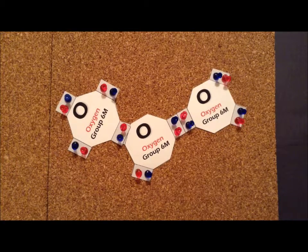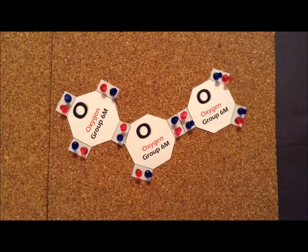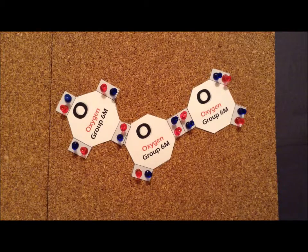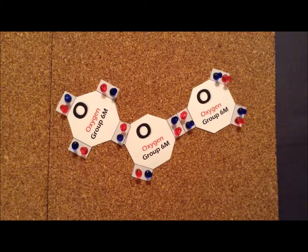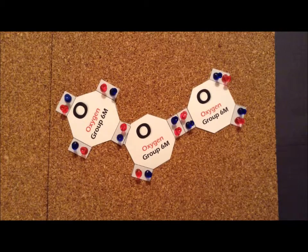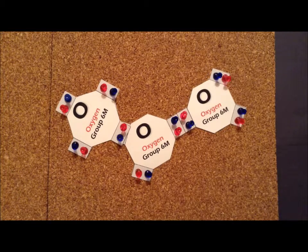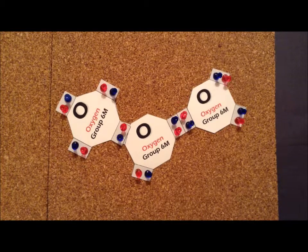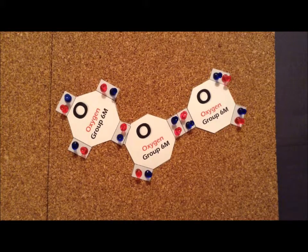Oxygen can also exist in another allotropic form other than dioxygen, O2. This other allotropic form of oxygen is called ozone, and it has the chemical formula O3. So we'd like to be able to construct the valid Lewis dot structure for this compound.